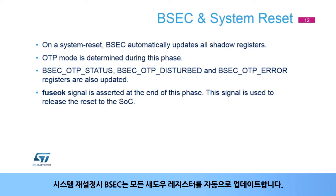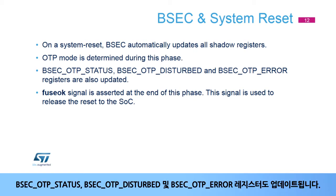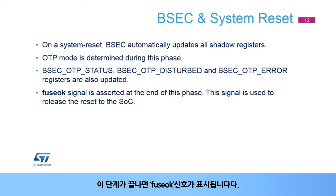On a system reset, BSEC automatically updates all shadow registers and the OTP mode is determined during this phase. The BSEC OTP status, BSEC OTP disturbed, and BSEC OTP error registers are also updated. The fuse OK signal is asserted at the end of this phase, and this signal is used to release the reset to the SOC.